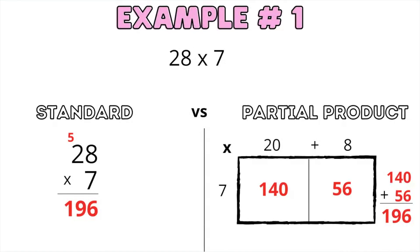Now we're going to multiply with the partial product. 28 is 20 plus 8, multiplied by 7. So first we're going to do 20 times 7 is 140. 8 times 7 is 56. We then add 140 plus 56, and the answer is 196.